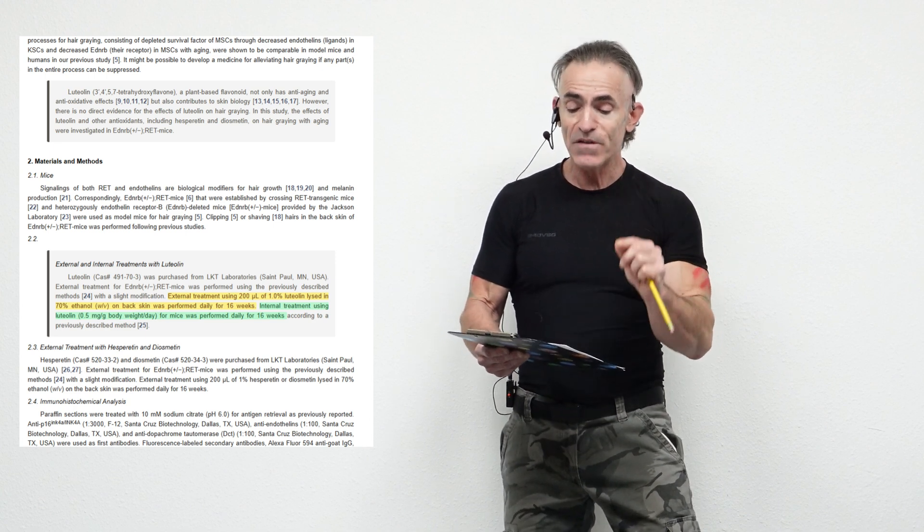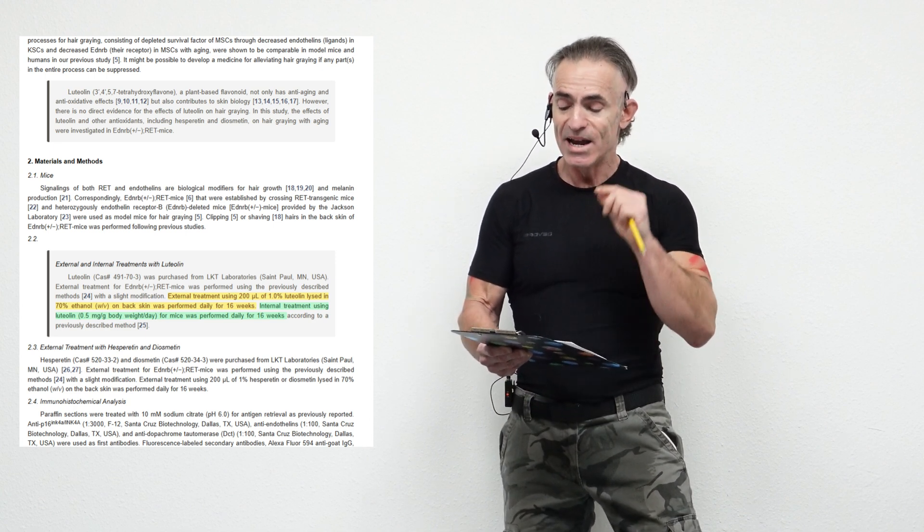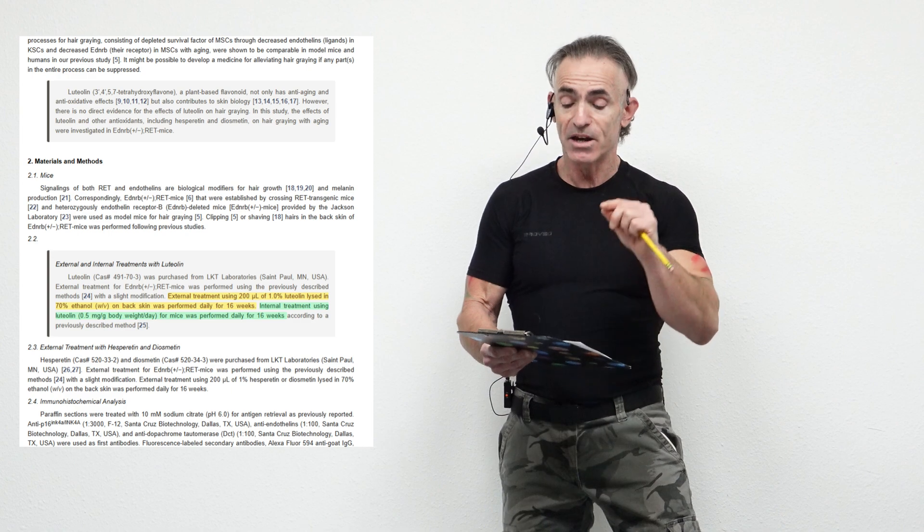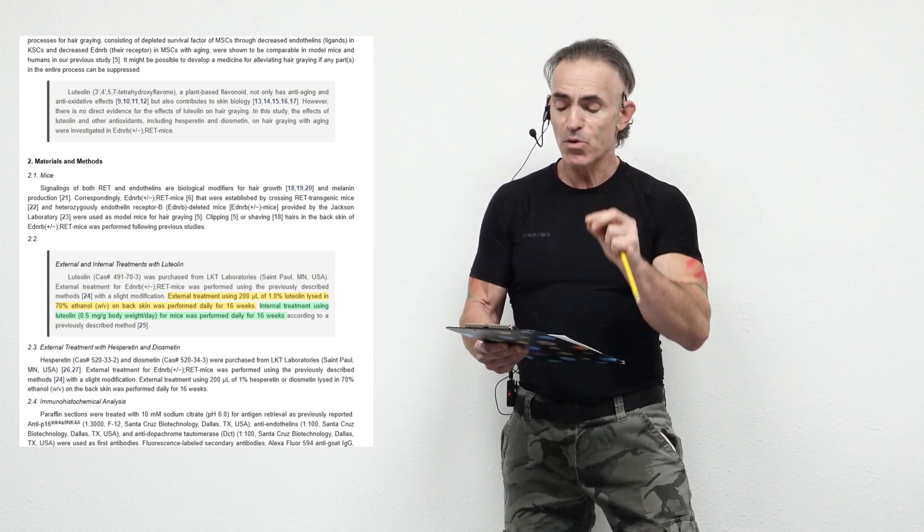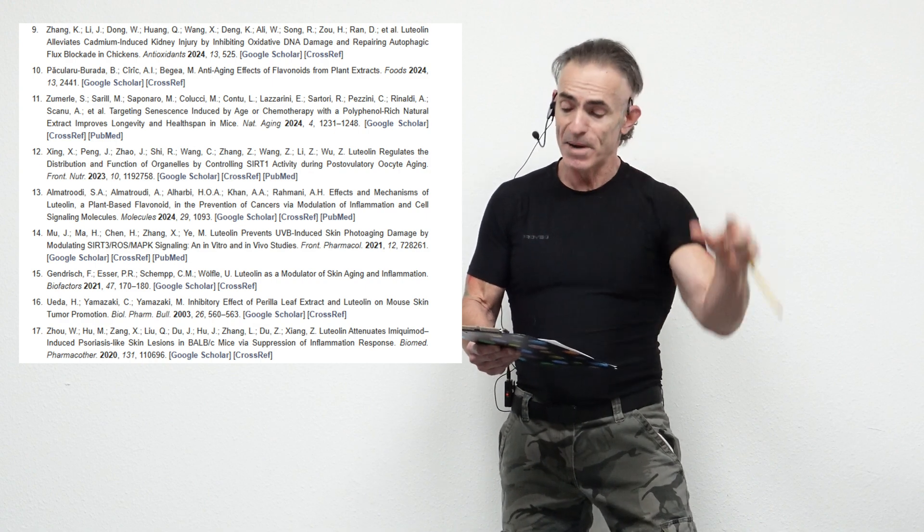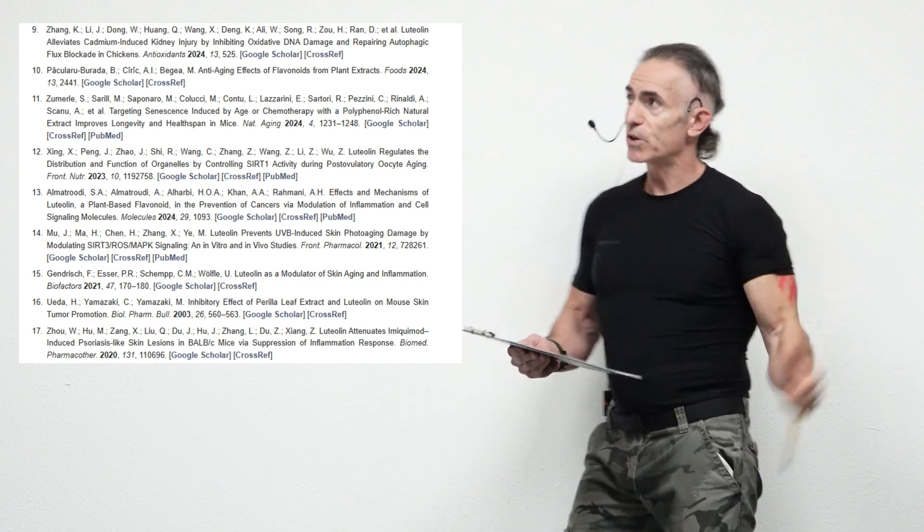there's no direct evidence for the effects of luteolin on hair graying. In this study, the effects of luteolin and other antioxidants, including other flavonoids and flavonols, on hair graying with aging were investigated in this particular group of mice.